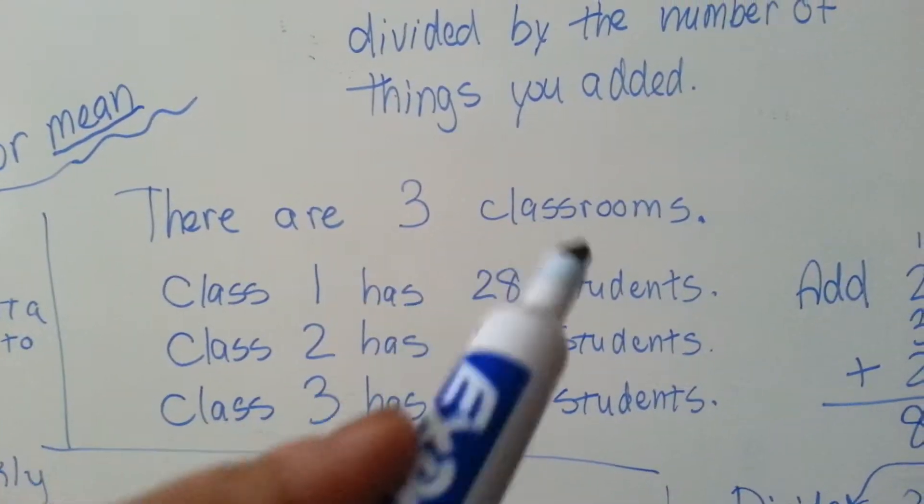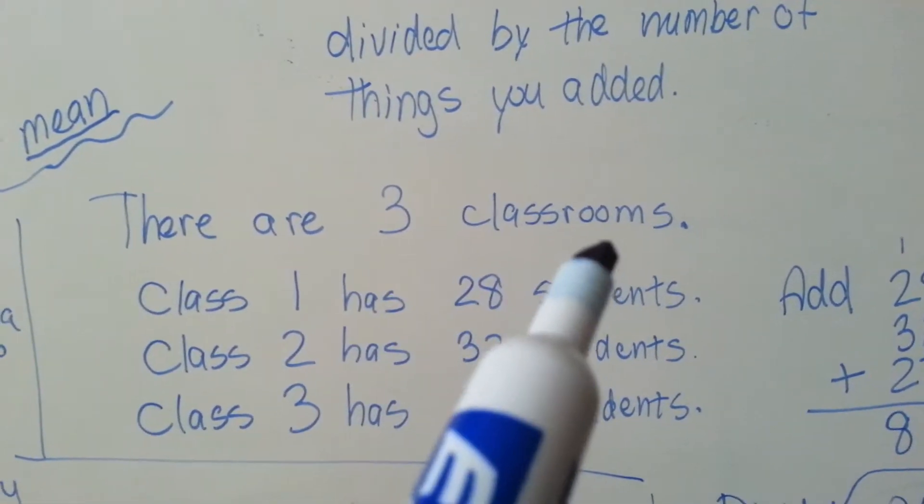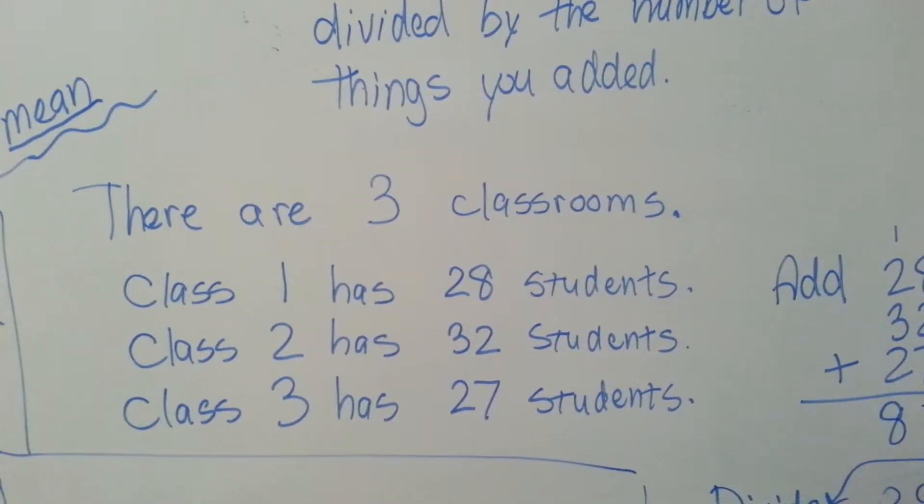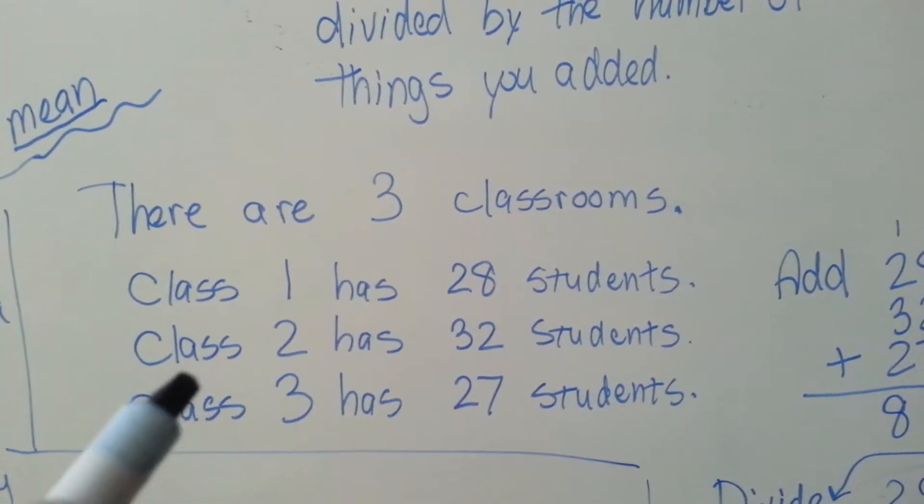Let's say there are three classrooms in a school, like three second grade classrooms or three seventh grade or whatever. And you want to know what the average amount of students are in the classrooms.